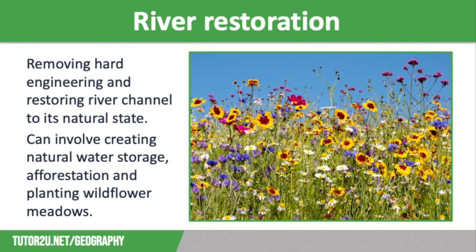The final soft engineering strategy is river restoration. This involves removing hard engineering strategies and restoring the river channel back to its natural state — for example, closing off underground drains that the channel has been rerouted through. This can involve lowering floodplains to create natural water storage areas and also usually involves afforestation projects and the planting of wildflower meadows, which absorb water and reduce runoff.